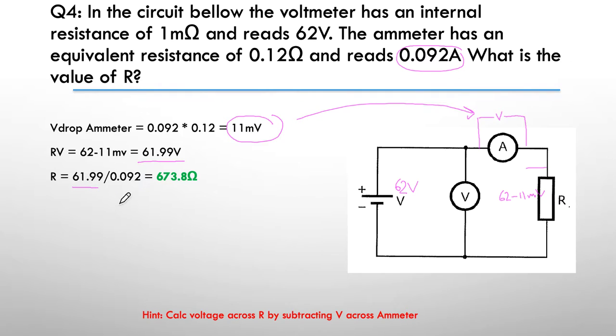R is V divided by I, telling me that it is 673.8 ohms is the value of the resistor.